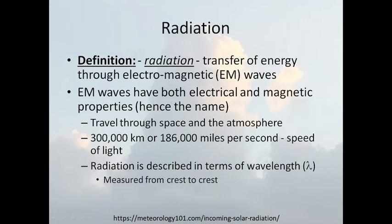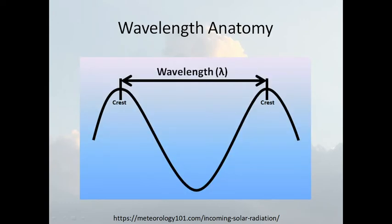Radiation is defined as the transfer of energy through electromagnetic waves. Electromagnetic waves have both electrical and magnetic properties — hence the name. They travel through space and the atmosphere at 186,000 miles per second — the speed of light. Radiation is described in terms of wavelength, measured from crest to crest. The shorter the wavelength, the stronger the radiation — that's the main thing to take from this. Something with strong radiation has a short wavelength, pulsing fast, and can burn you — the more energy it has.